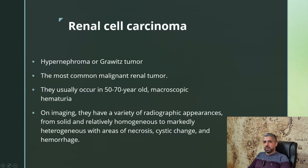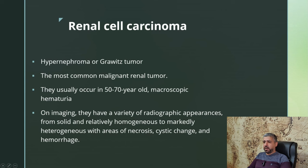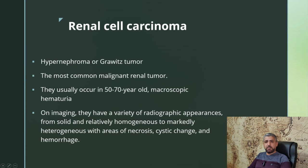Regarding renal cell carcinoma, it's also known as hypernephroma or Grawitz's tumor. They are the most common malignant renal tumors, usually occurring around the age of 50 to 70 years old. They present most commonly with macroscopic hematuria, sometimes with renal pain. On imaging, they have a very wide variety of radiographic appearances — they can be solid, relatively homogenous or markedly heterogeneous, with areas of necrosis.